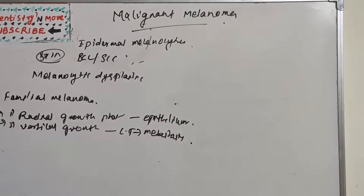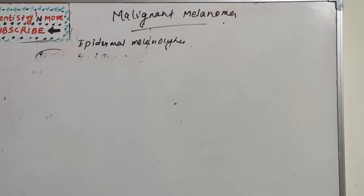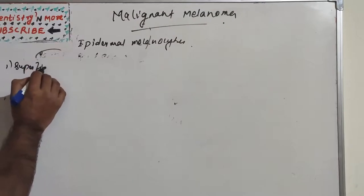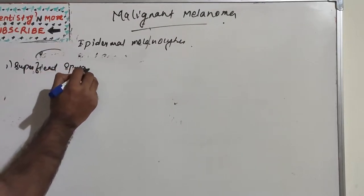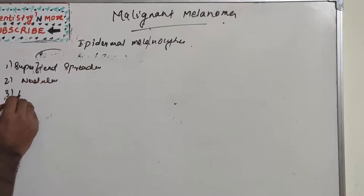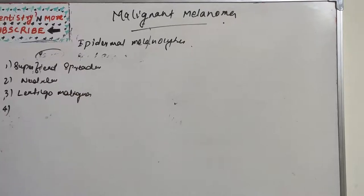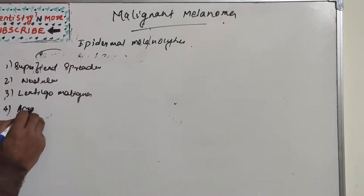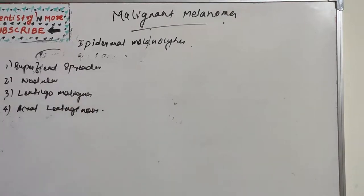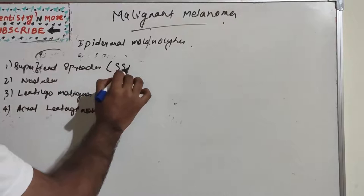There are four types of melanoma: the first is superficial spreading melanoma (SSM), the second is nodular melanoma, the third is lentigo maligna melanoma (LMM), and the fourth is acral lentiginous melanoma.